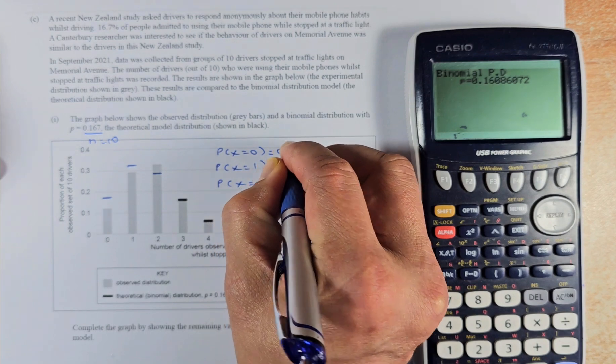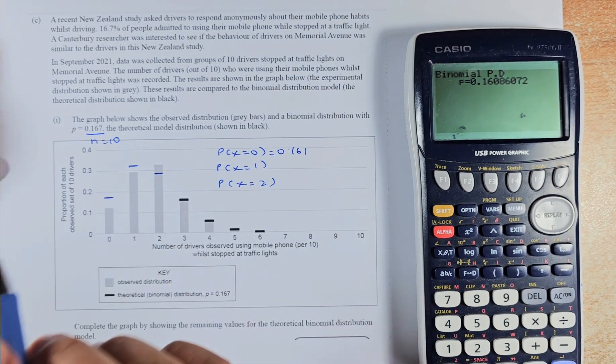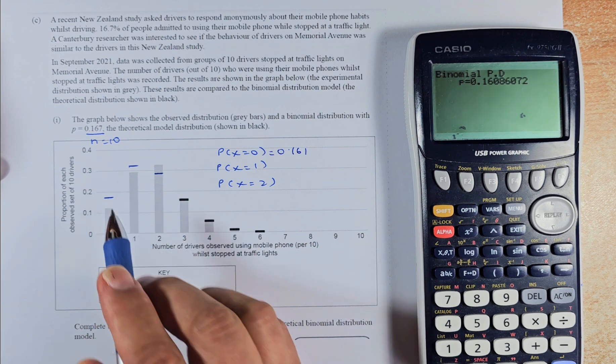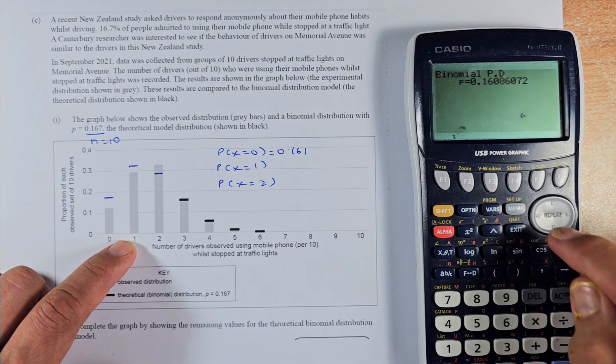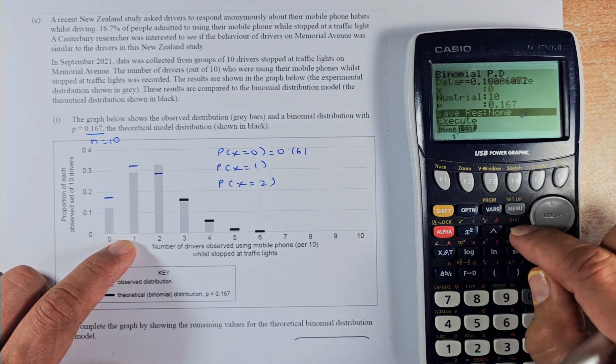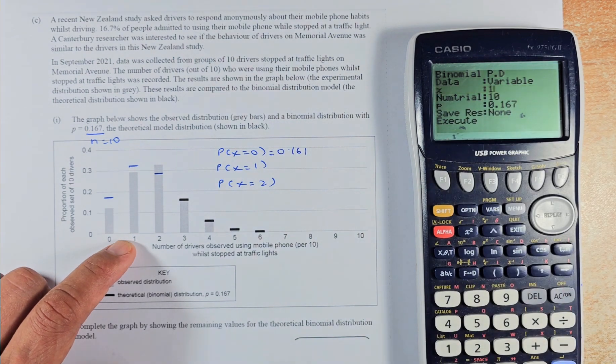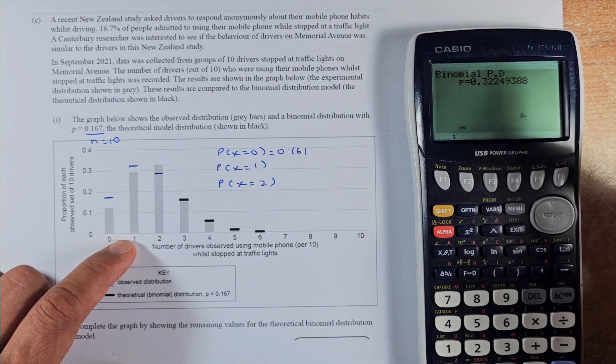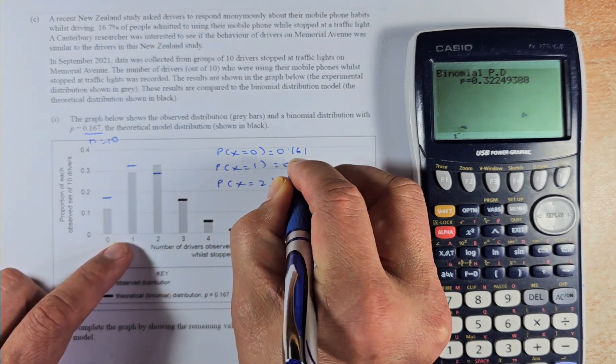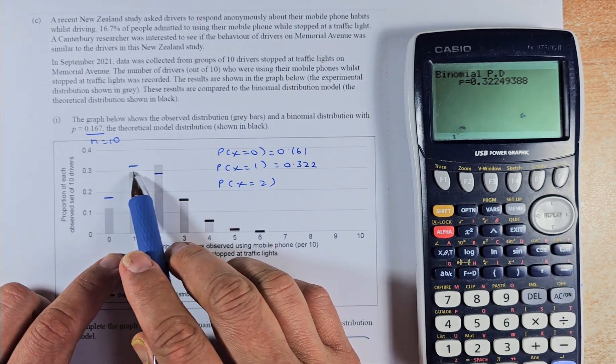So we're going to put 0.161. So that is how we get 0.161. That's the point there. That is the theoretical probability. Similarly, we're going to do for x equal to 1. So the same thing we're going to exit. And this time, instead of x equal to 0, we're going to change to 1. And the rest is the same. Execute, execute. And the answer is 0.322. So 1 is 0.322. So that is where the point is going to be. 0.3 is here. Slightly above 0.3 is 0.322.